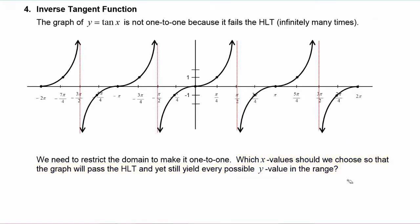Let's take a look at the range of tangent. We can see it goes forever in the negative infinity direction and forever in the positive infinity direction, so we know that the range of tangent is negative infinity to positive infinity. Whatever region of the graph we pick has to cover all those y values.